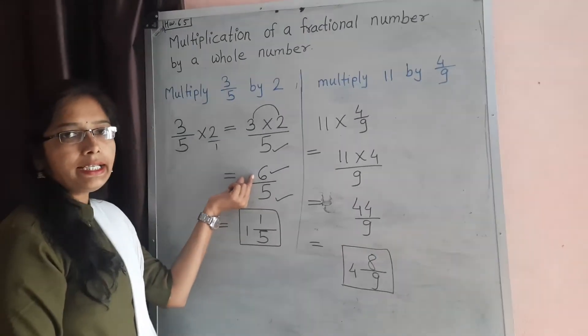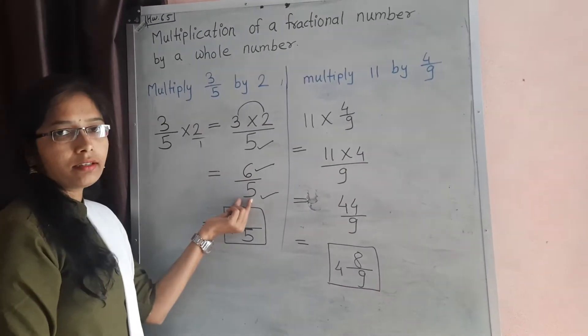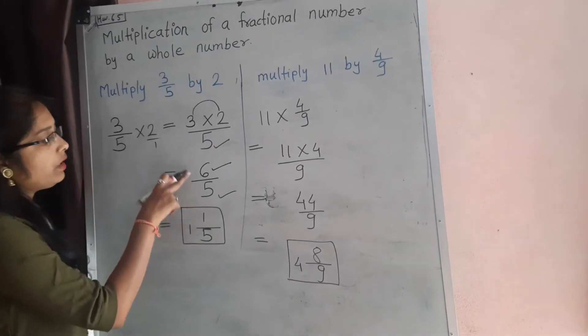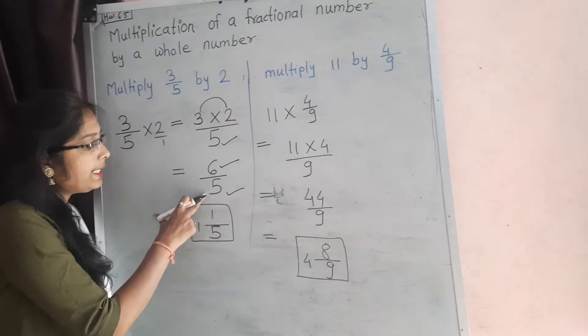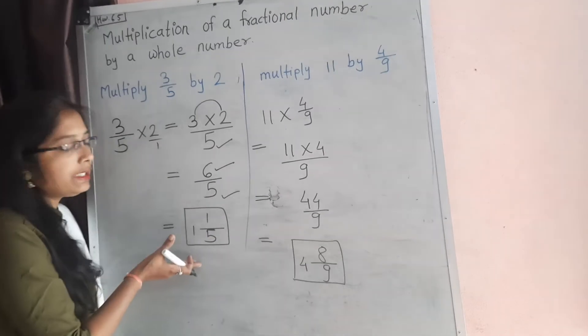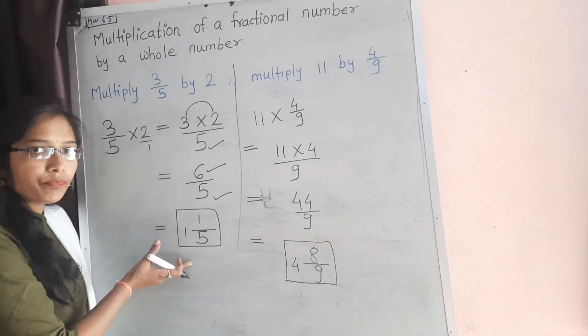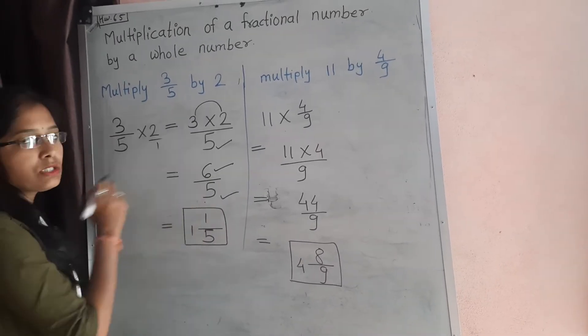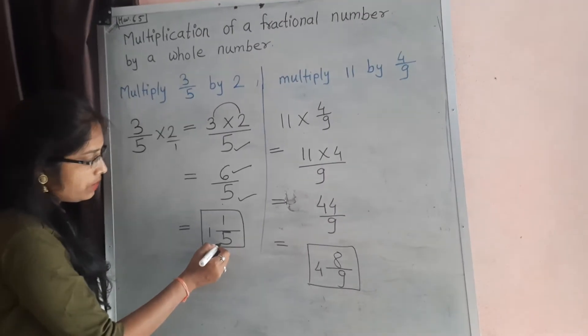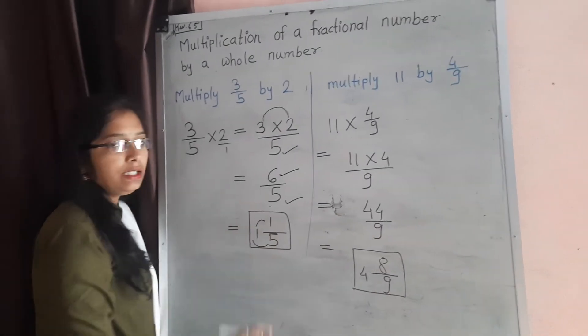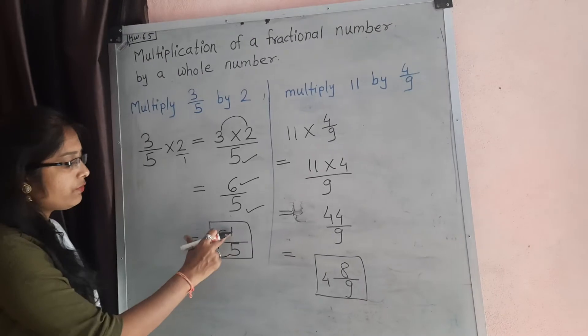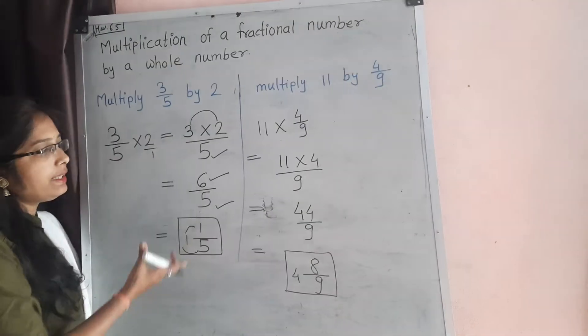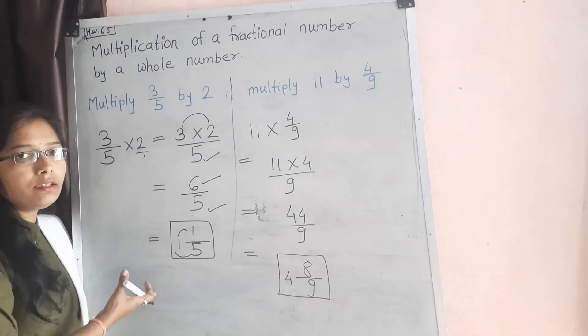Now here numerator is bigger than that denominator. So when our numerator is bigger than denominator, we just convert into mixed fraction. So just convert in mixed fraction: 5 once is 5 plus 1 is 6. So our answer is 1 and 1/5. Understand? You know all these examples we already learned in last chapter.